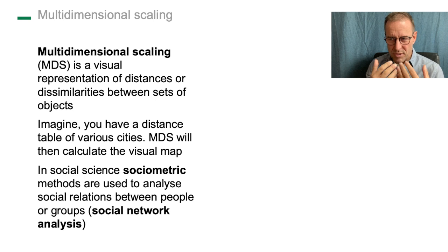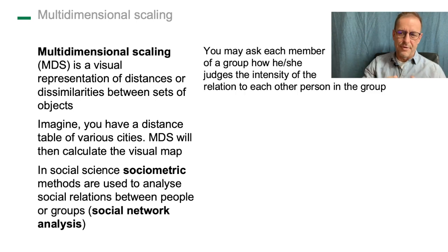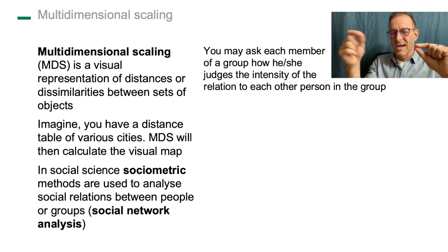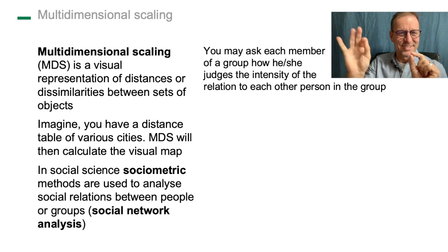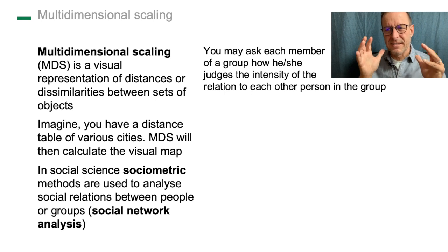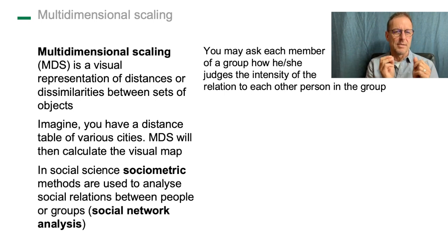You can stick to this example of your class. Let's say you have 30 people in your class. Then you could ask everybody of these 30 people: here are the other 29, how is the relation to each of the 29 others? How would you estimate your relation from, let's say, very close to very distant? This idea of distance, which is absolutely central in multidimensional scaling, can also be interpreted in a social way.